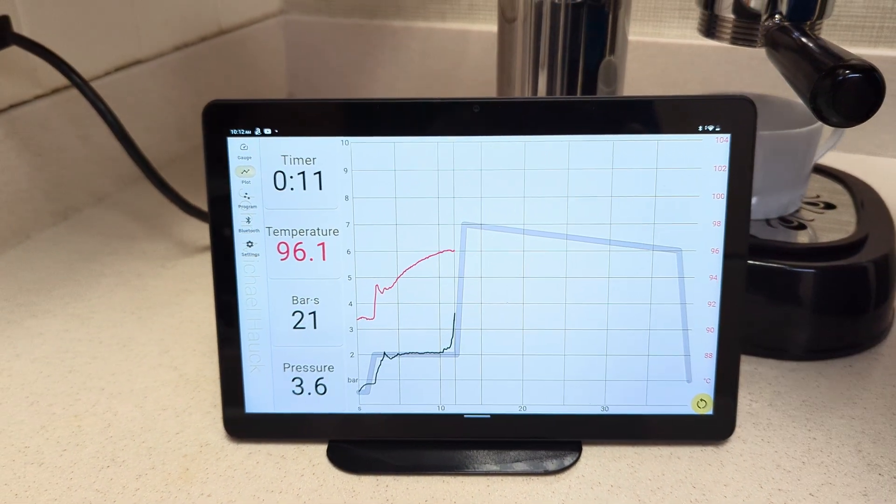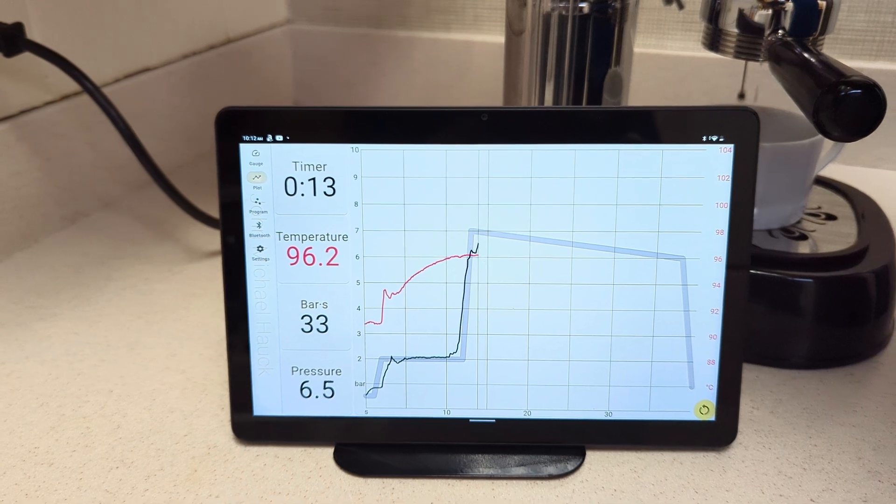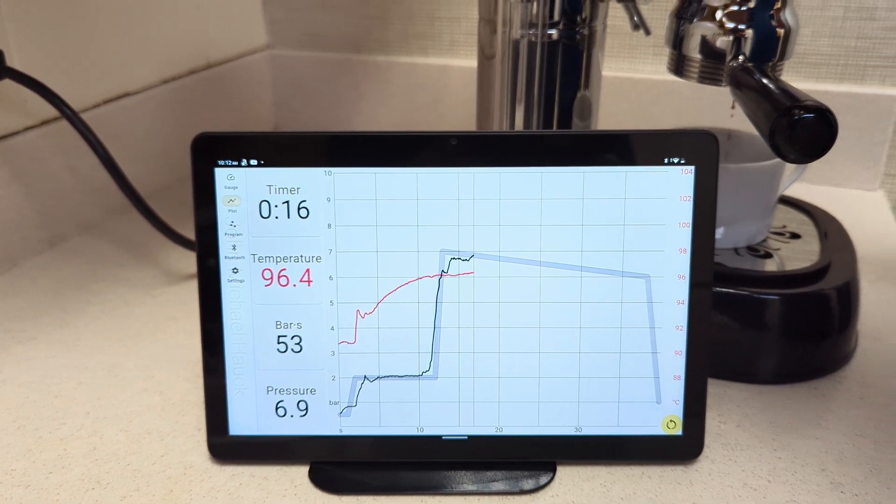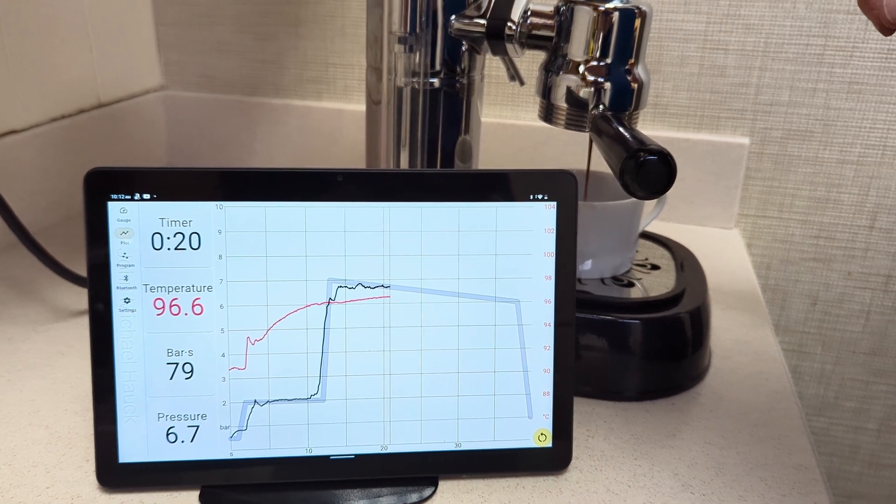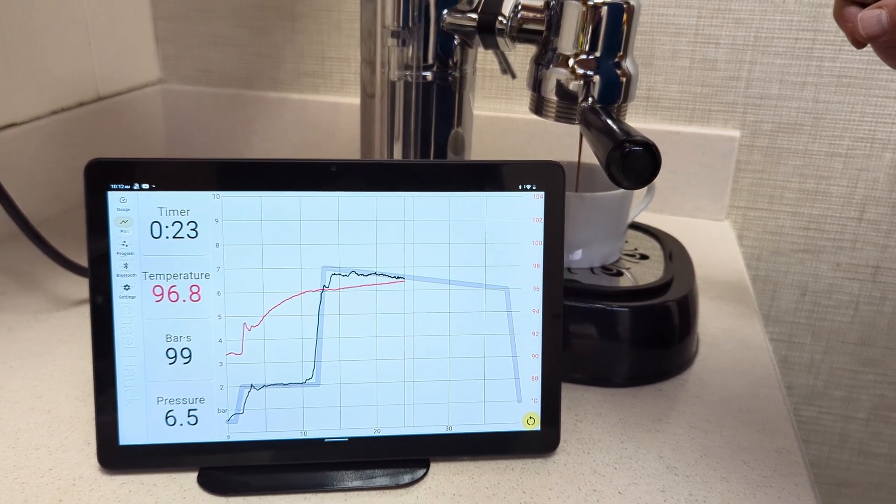So now I'm going to go up and hold it right here at about seven bar. And the reason the black line is going up and down is because I'm nervous about making a video. That's perfect.